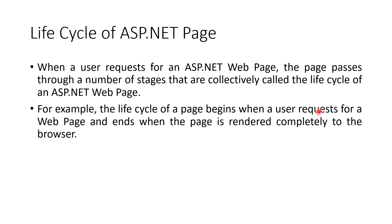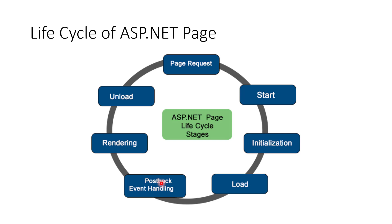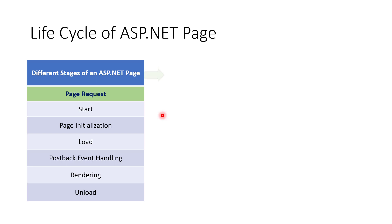When the user requests an ASP.NET web page, the page passes through a number of stages collectively called the ASP.NET page life cycle. For example, the lifecycle of a page begins when the user requests a web page and ends when the page is rendered completely to the browser. There are a total of seven stages: Page Request, Start, Initialization, Load, Postback Event Handling, Rendering, and Unload.